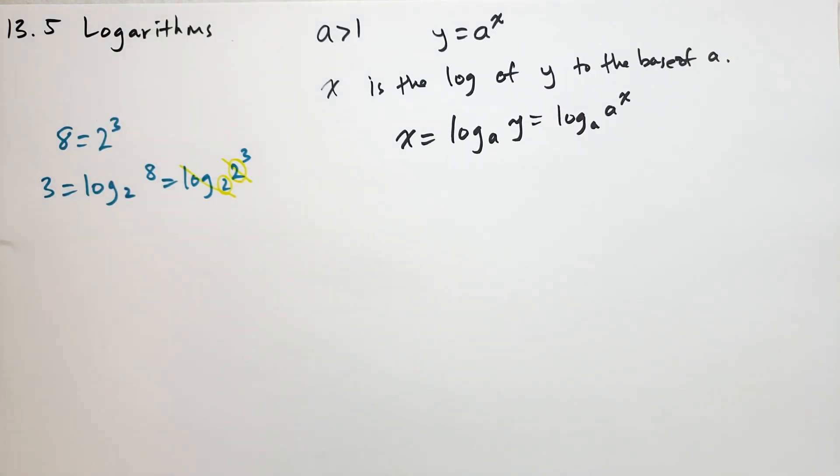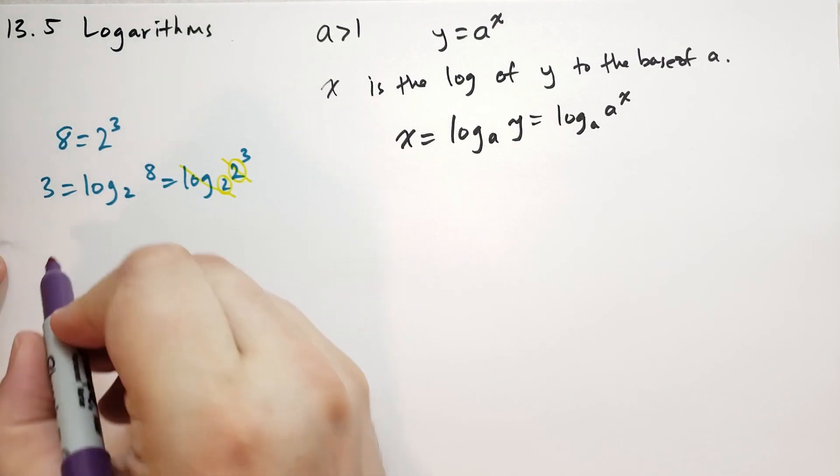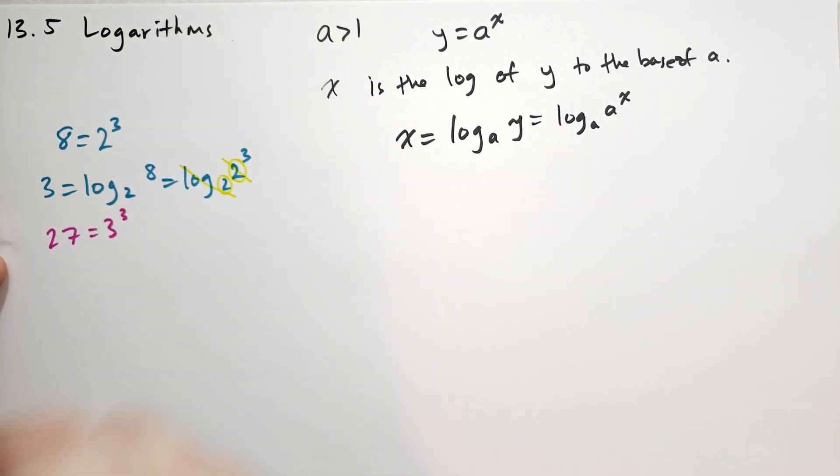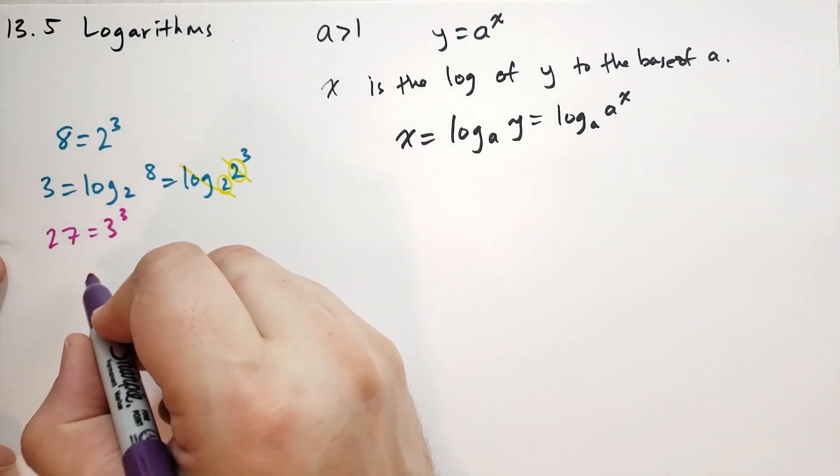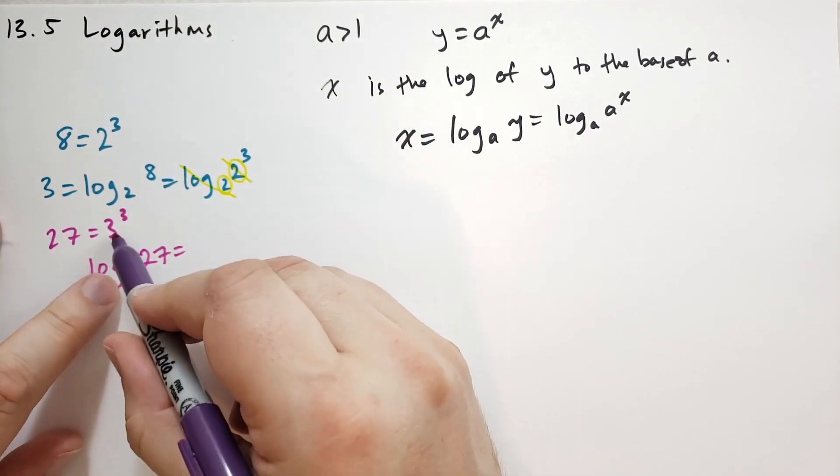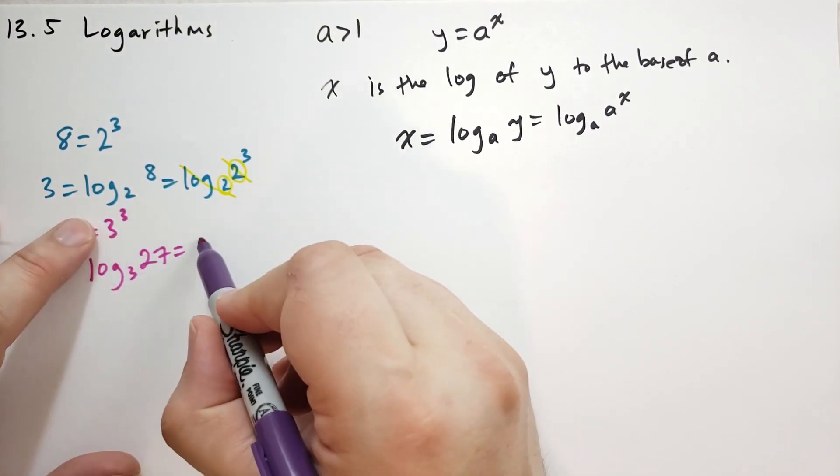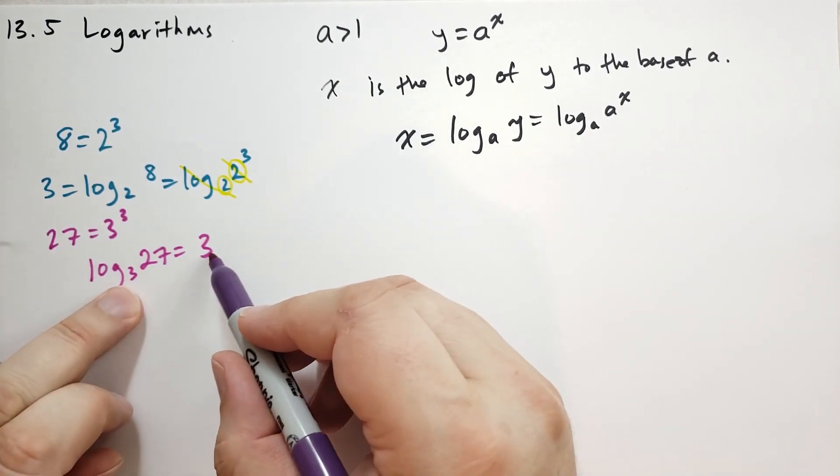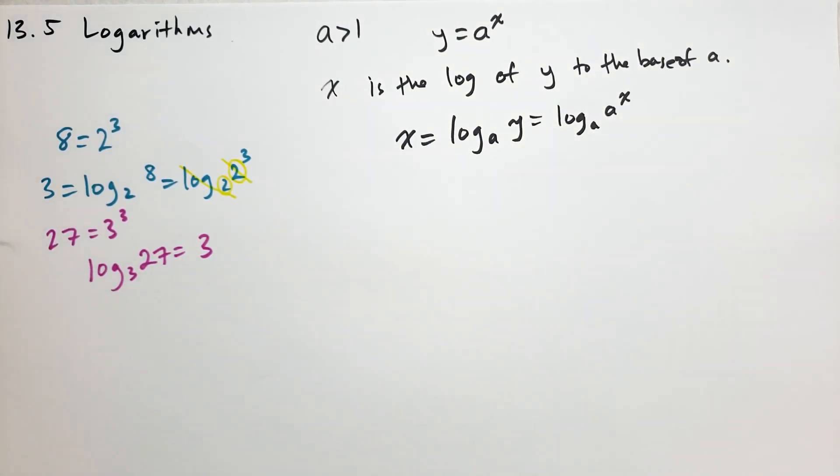Let's do another example. In this case, we have 27. That's equal to 3 to the 3rd. So suppose we wanted to take the log base 3 of 27. Well, that's 3 to the 3rd, so we're taking the exponent part, so that's going to give us 3. Because 3 raised to the 3rd power is 27.